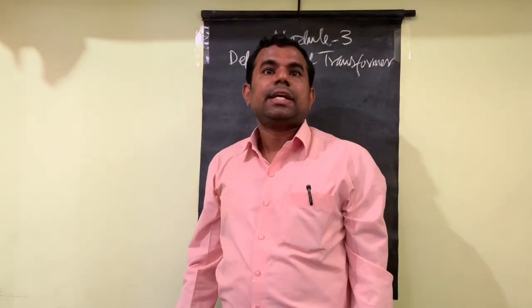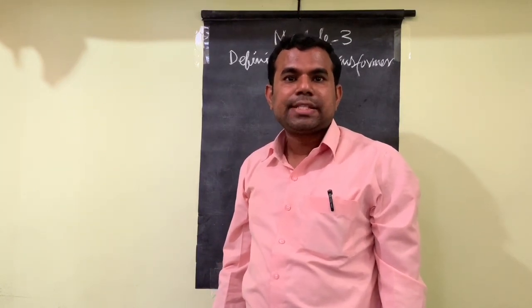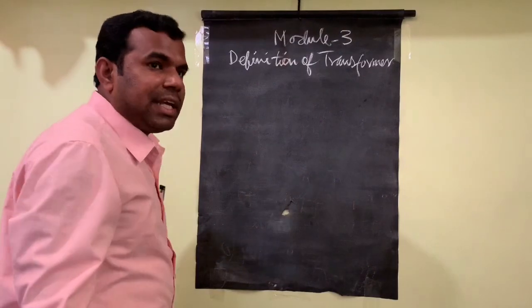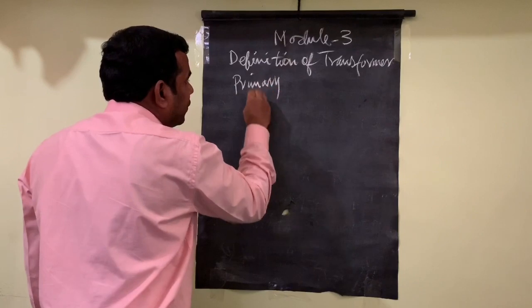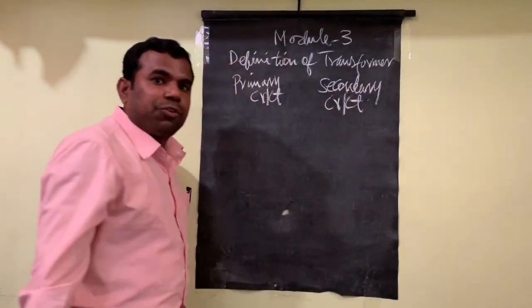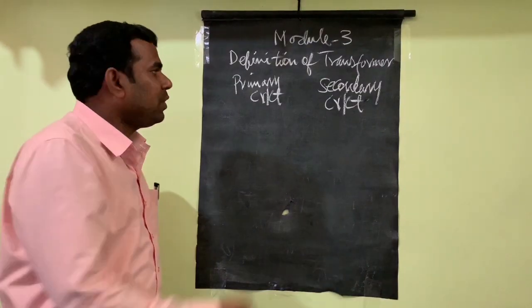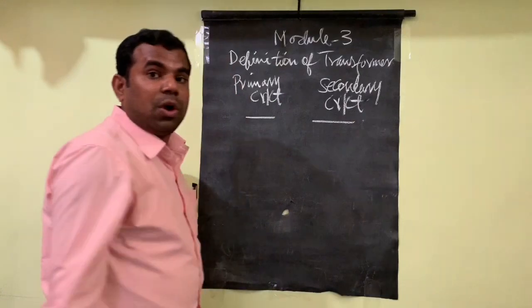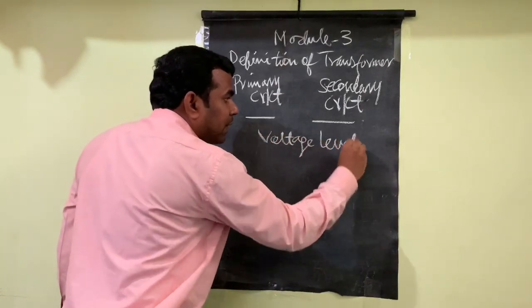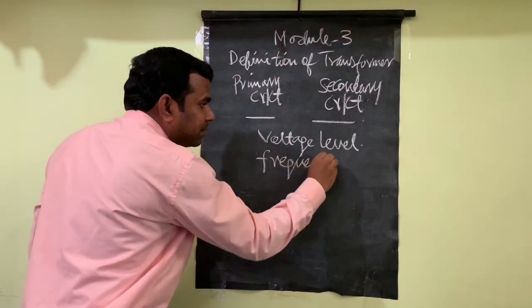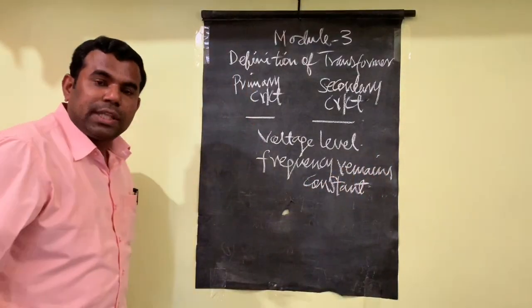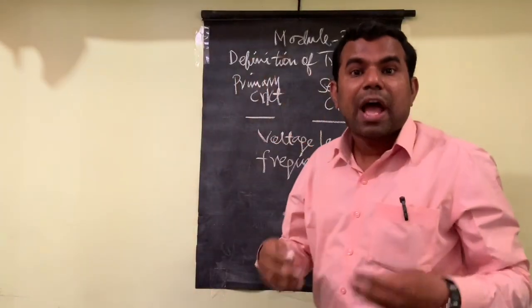A transformer is a static electrical machine or a static electrical device which transfers electrical power from one circuit to another circuit. In a transformer there are two circuits called the primary circuit and secondary circuit. An important thing here is that in this transfer of power, the frequency remains constant.